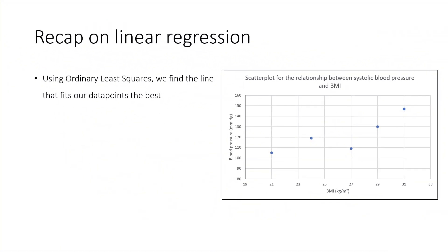Before we dive deeper into interaction, let's do a quick recap on linear regression, which we're going to build upon. If you haven't watched my video on linear regression yet, make sure you do before continuing. In that video, we wanted to quantify the relationship between BMI and blood pressure, where blood pressure was the dependent variable and BMI was the independent variable. We used linear regression to find a line that fits through the data points in the best way possible, achieved by ordinary least squares estimation — minimizing the squared distance from each data point to the regression line.